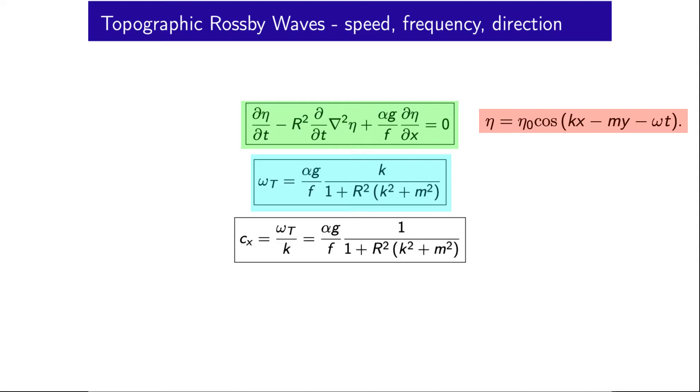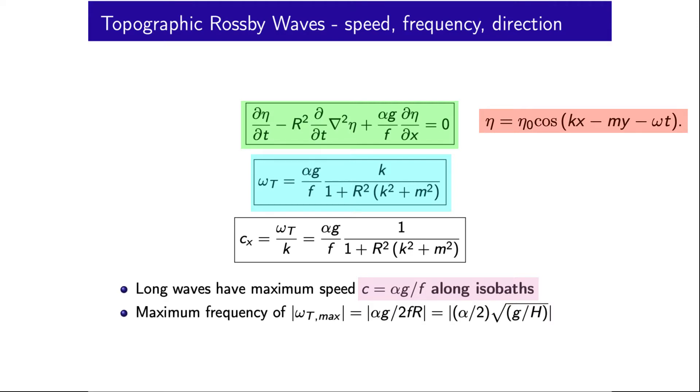Again, we can explore the bounds on this relation and quickly discover that the longest waves have a maximum speed of Cx equals α times gravity on f, and these are oriented in the x direction, so along isobaths, and that the topographic Rossby waves have a maximum frequency of αg on 2fr, which reduces to α on 2 times the square root of g on H, which is interesting because it doesn't depend on f, only on α, the slope of the topography.